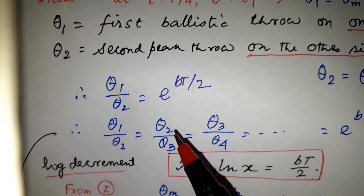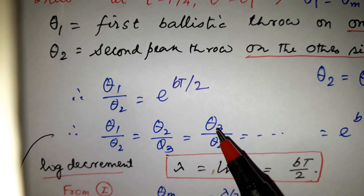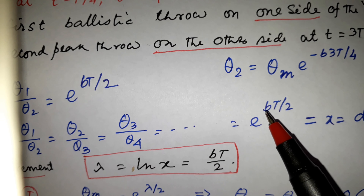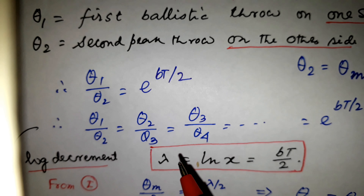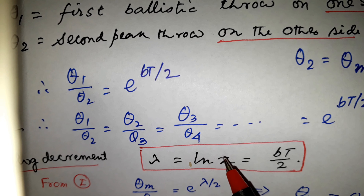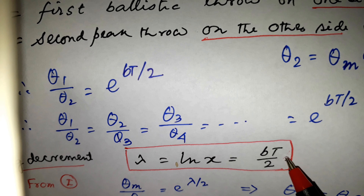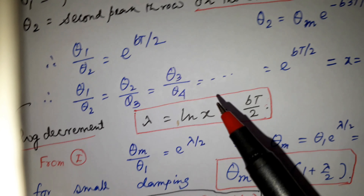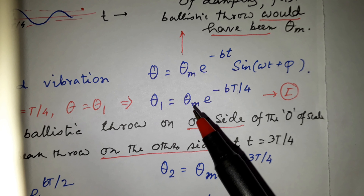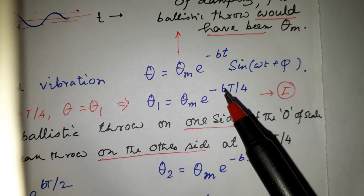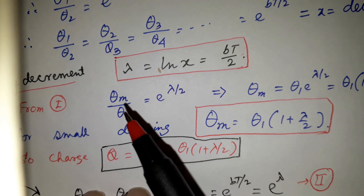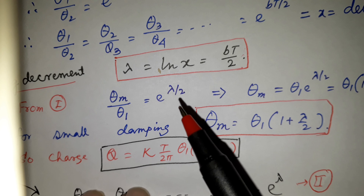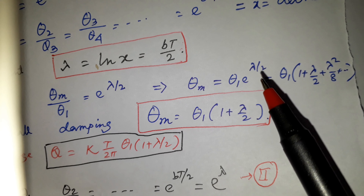The ratios theta_1/theta_2 equal theta_2/theta_3 equal theta_3/theta_4 are all equal to e to the power bT/2, called the decrement x. Taking the log, the log decrement lambda equals log x equals bT/2. From equation 1, theta_1 equals theta_m times e to the power minus lambda/2, since bT/2 is lambda. So theta_m divided by theta_1 equals e to the power lambda/2.